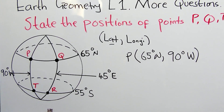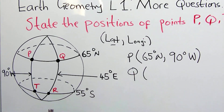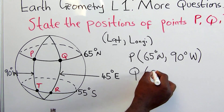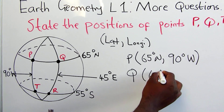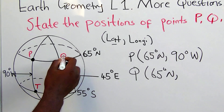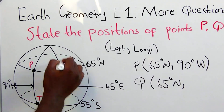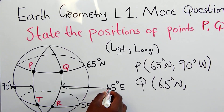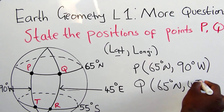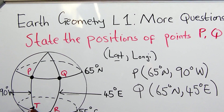For point Q, P and Q are lying on the same latitude, which is 65 degrees North. For Q, the longitude is on the other side, which is 45 degrees East. So the position of point Q is (65°N, 45°E).